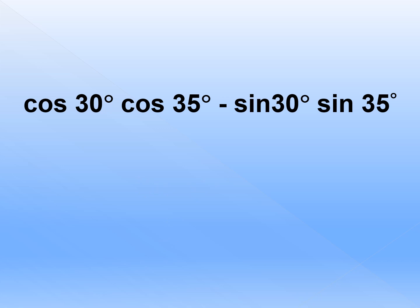Let's try another example: cos30·cos35 minus sin30·sin35. Again, it follows the pattern cos, cos, sin, sin, so we're going to have cosine. Since the operation on the middle term is minus and we're dealing with cosine, we're going to add a and b. 30 plus 35 is 65. Therefore, we have cos65 degrees.